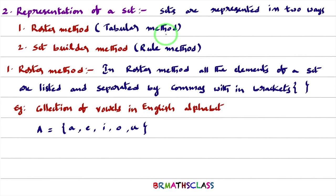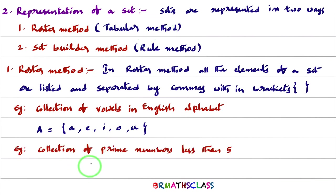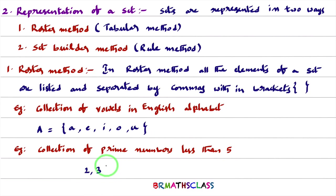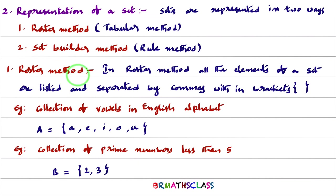One more example: collection of prime numbers less than 5. Prime numbers are well-defined, and we are told less than 5, so this is a set. In roster method, we list all prime numbers less than 5: 2, 3 — separated by commas within brackets. So this set is represented as {2, 3}. This is the roster method, also known as the tabular method.